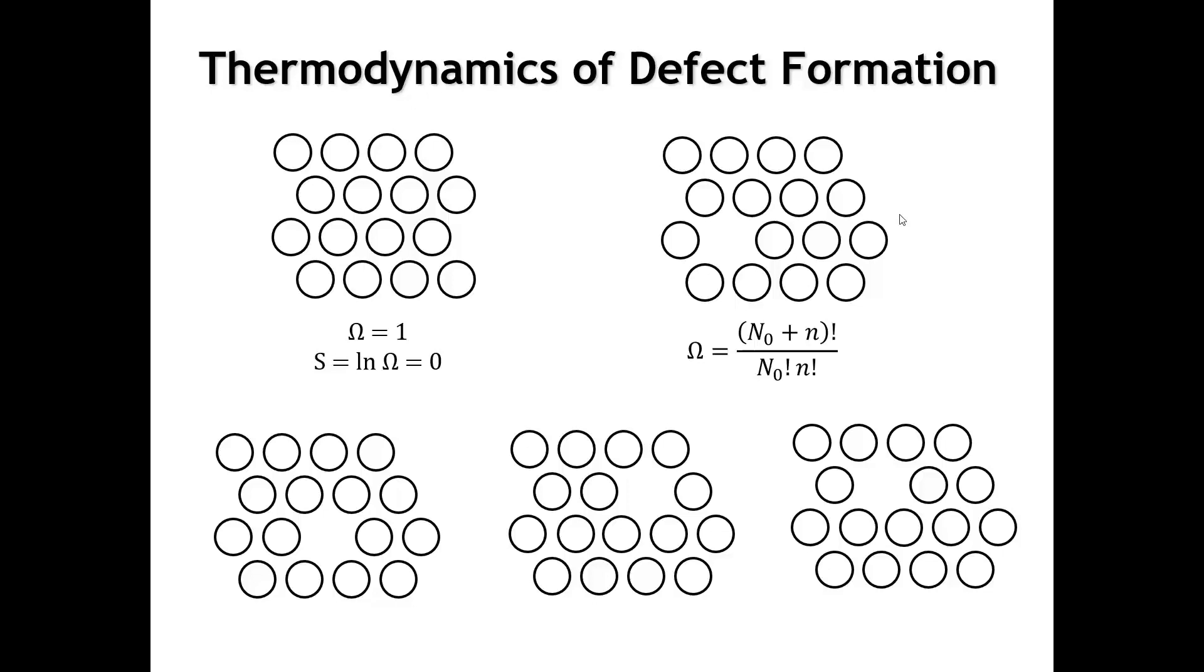Remember what Boltzmann taught us, that configurational entropy is simply going to be the natural log of the number of configurations times the Boltzmann constant. And so, as we put these vacancies in, we're going to increase the configurational entropy of the crystal. So, how will that affect the free energy of the crystal?